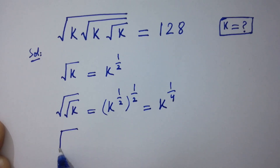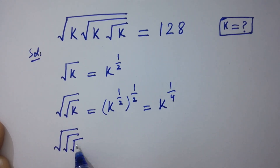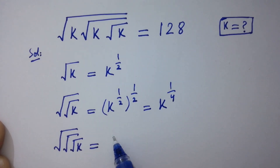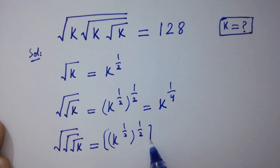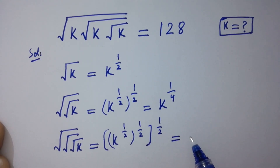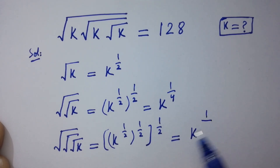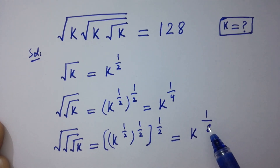And square root of square root of square root of k equals k to the power 1 over 2, to the power 1 over 2, to the whole power 1 over 2, which is equal to k to the power 1 over 8.